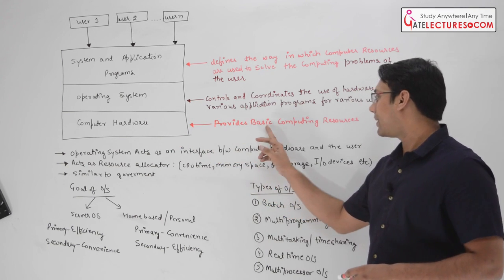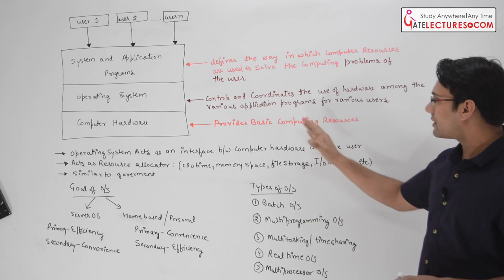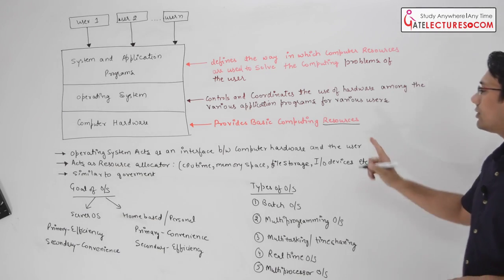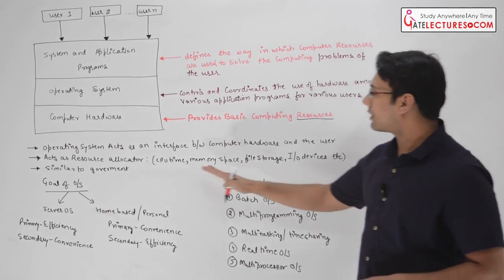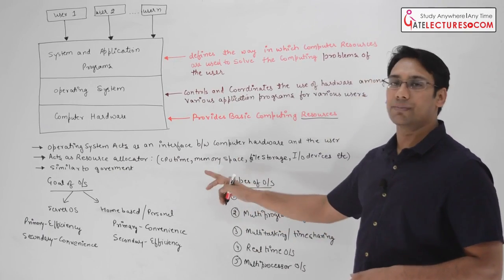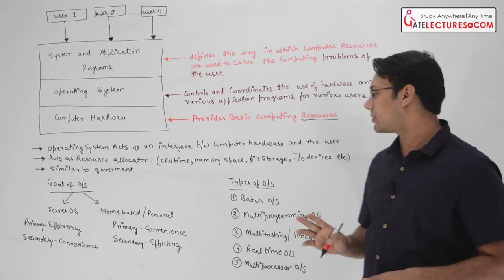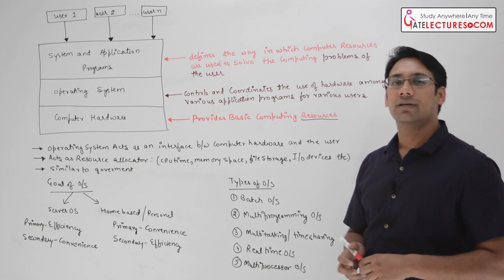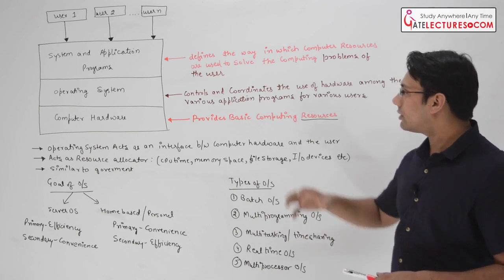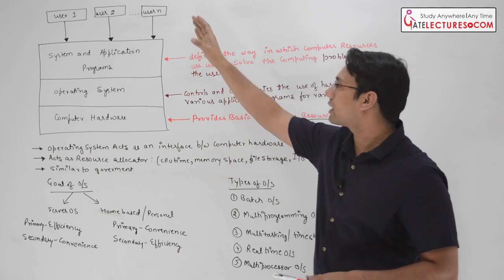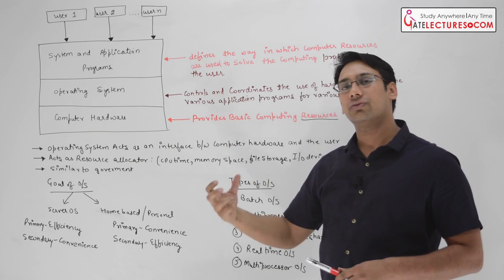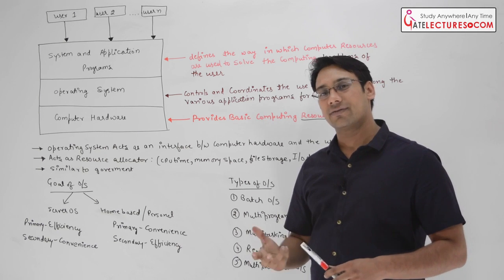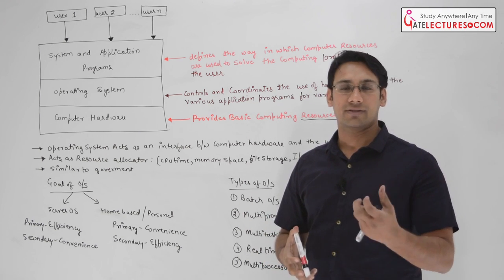The computer hardware provides the basic computing resources. These resources include CPU time, memory space, file storage, I/O devices, and even printers. Now if there are multiple programs or multiple users communicating with the computer, we want to use the hardware as efficiently as possible. There are various challenges which the operating system faces — for example, synchronization is an important challenge and an important functionality of the operating system.